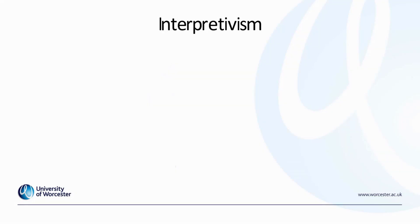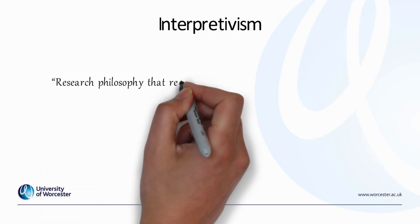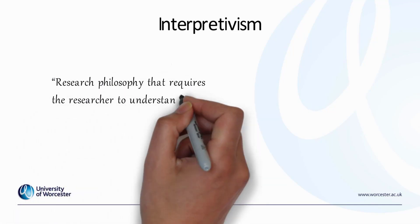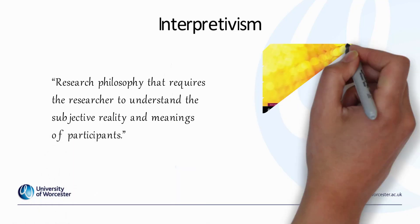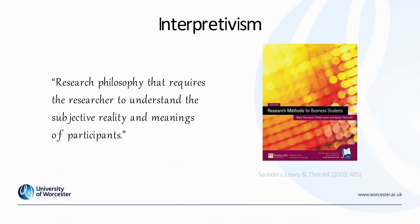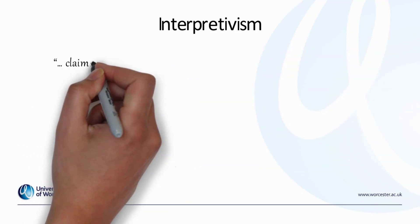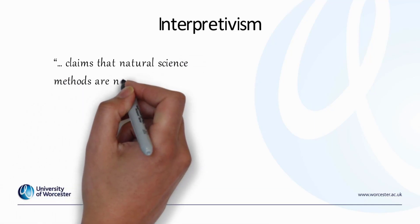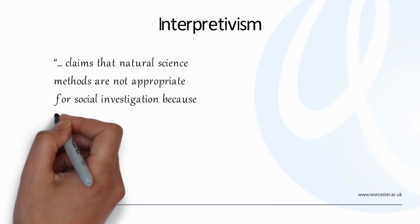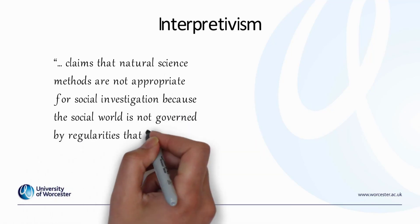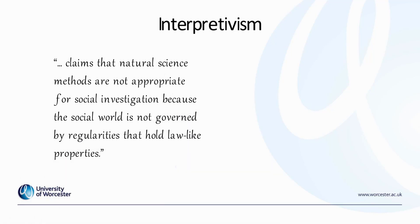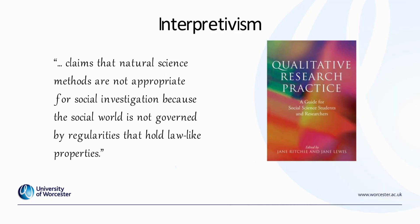This differs from interpretivism. Interpretivism is a research philosophy that requires the researcher to understand the subjective reality and meaning of participants. Interpretivism claims that natural science methods are not appropriate for social investigation because the social world is not governed by regularities that hold law-like properties. So we can see that positivism and interpretivism are at the different ends of a spectrum or continuum.